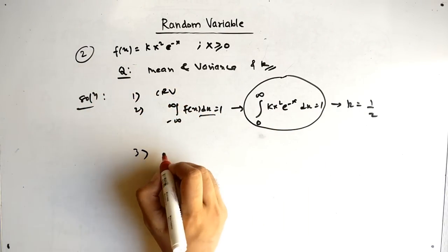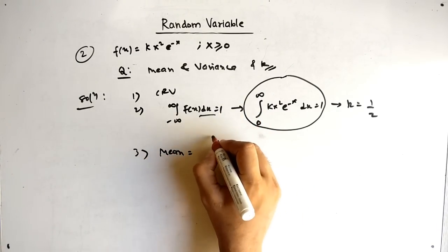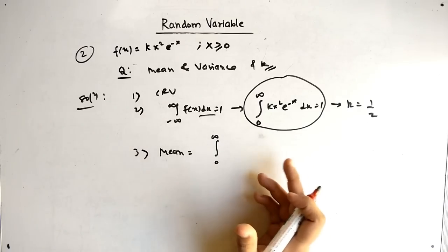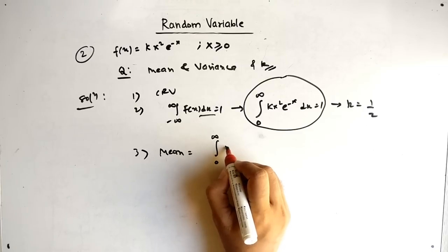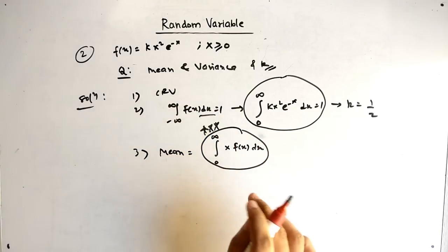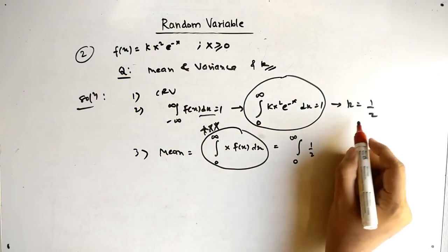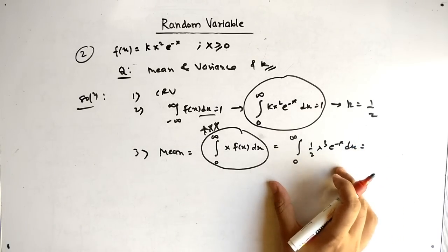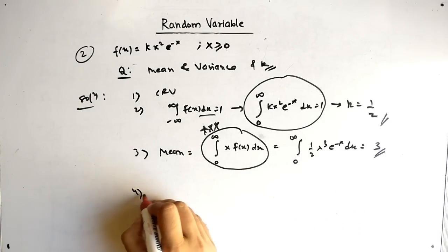Now the main aim is finding mean and variance. Mean equals E(x), which is the integral from 0 to infinity of x times f(x) dx. Substituting k = 1/2 and f(x) = kx²e^(−x), we get (1/2) times the integral of x³ e^(−x) dx from 0 to infinity. Solving this integral gives mean equals 3.